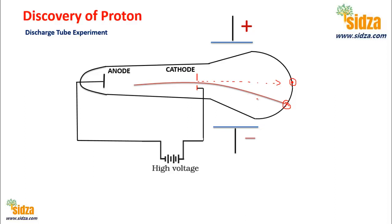These rays are called anode rays. You need to be careful — these are not radiations that come from or are emitted by the anode. We will see the origin of these anode rays later in the same video.